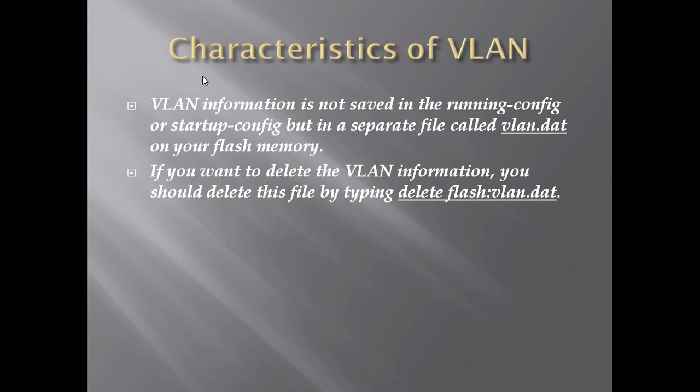Some basic characteristics of VLAN: VLAN configuration will never be saved in the running configuration or startup configuration. It will be saved in a separate file called vlan.dat. Even if you erase the running configuration, the VLAN information will not be removed. If you want to remove VLAN information from the switch, you must use the command 'delete flash:vlan.dat' — only this command will remove the VLAN information. It is saved in flash memory in the file called vlan.dat.